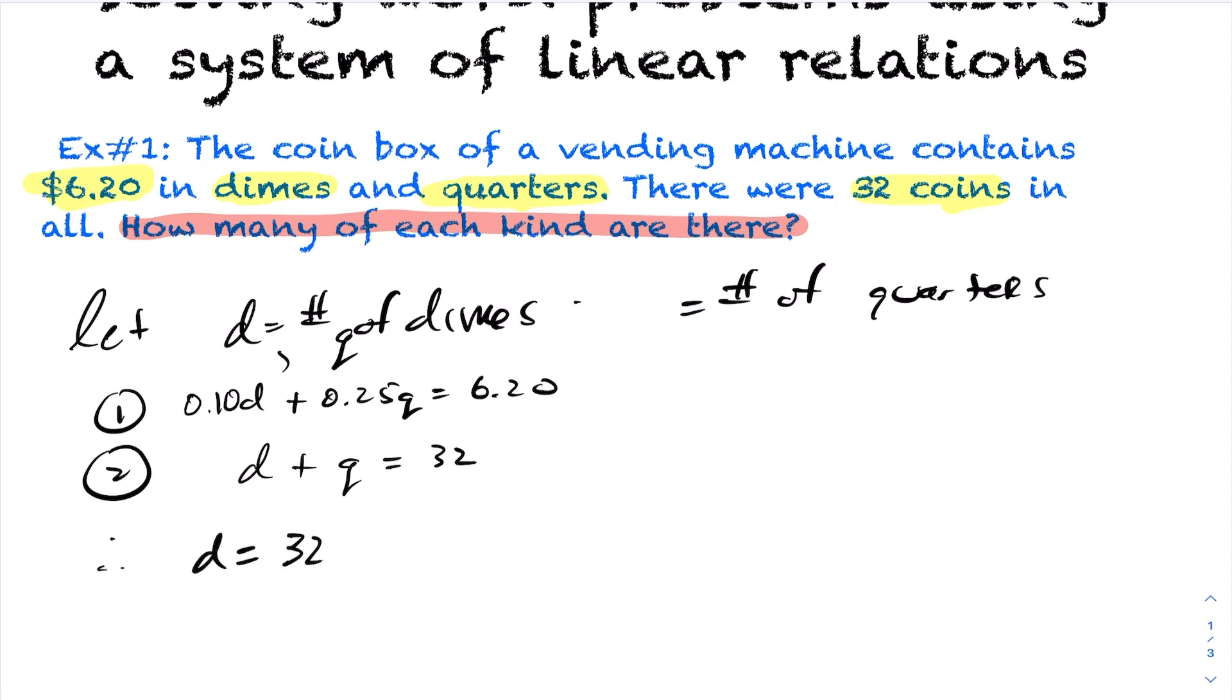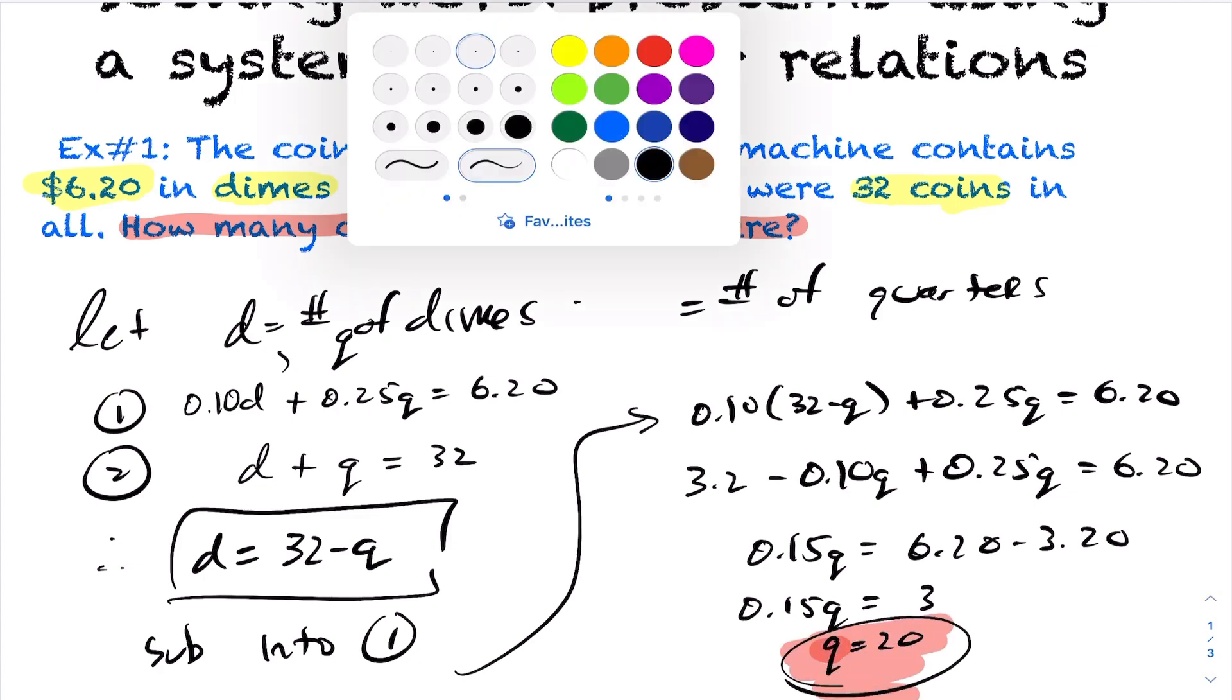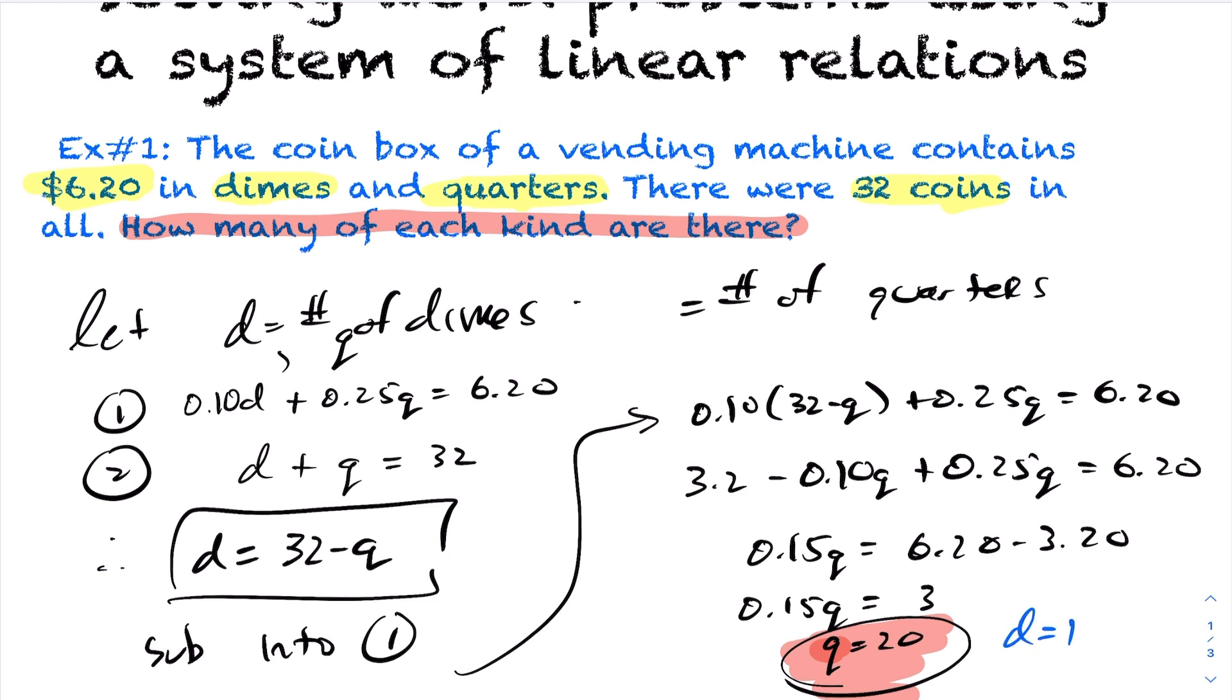So therefore, d is going to equal 32 minus q. And I'm going to sub this into equation 1. So everywhere I see a d, I am now going to change that to a 32 minus q. All right, so now we do our distribution. This becomes 3.2 minus 0.10q plus 0.25q is $6.20. This is 0.15q is $6.20 minus $3.20. So 0.15q is $3. And then 3 divided by 0.15, the number of quarters we have is 20. So therefore, if it's summing to be equal to 32, I must have 12 dimes.